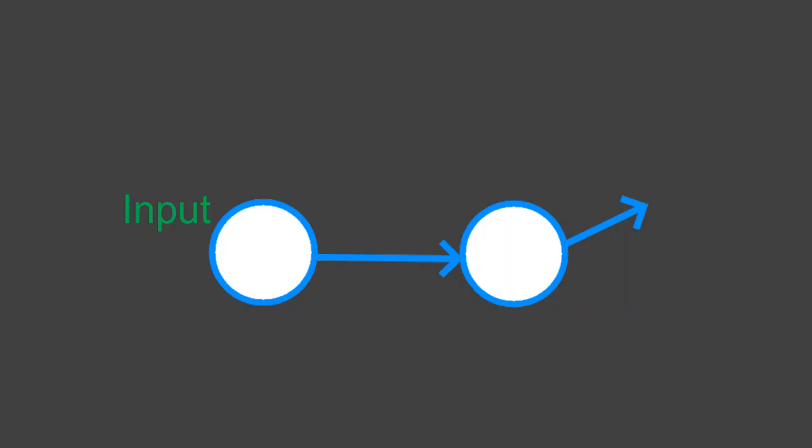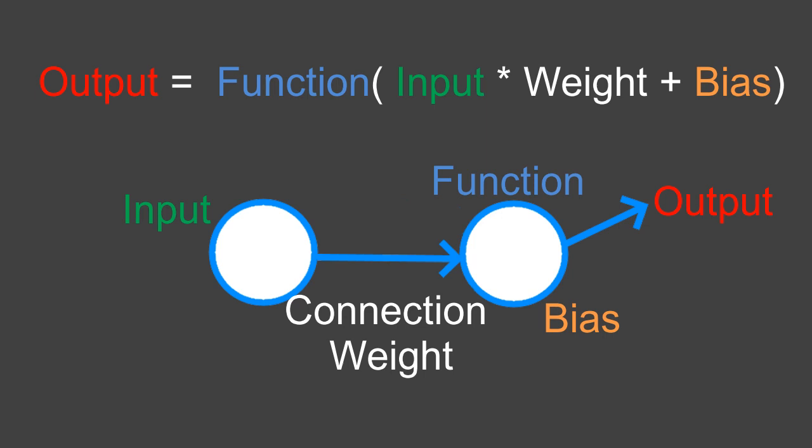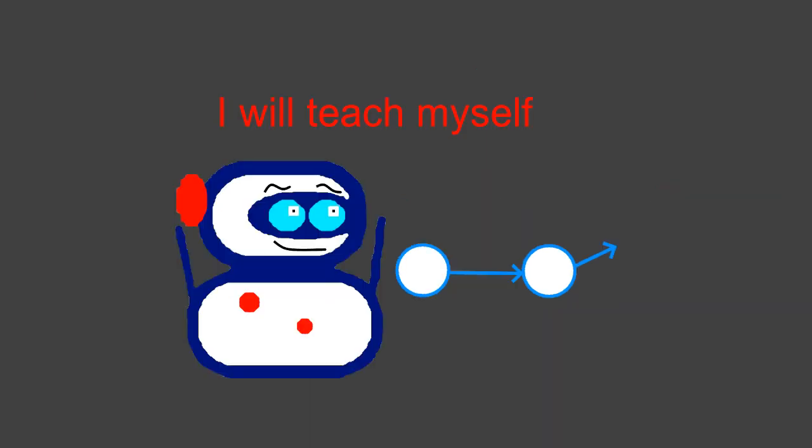The neural network has exactly three things it does with the input number to get an output. First, it multiplies the input by some connection weighting. Think of this as happening along the line between the nodes. Then, at the output node, it adds a bias value to that product. And finally, it runs the result through a function to get the output number. The connection weighting, the bias value, and the node function are all things that can be adjusted to make the neural network better. And making those adjustments is how computers learn.